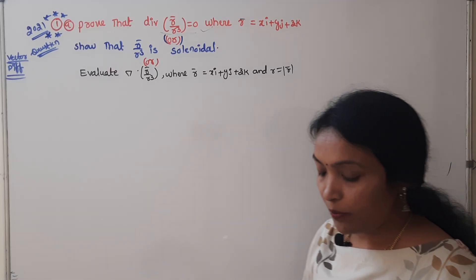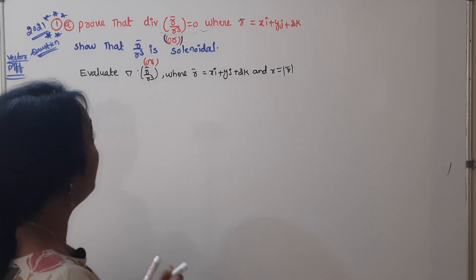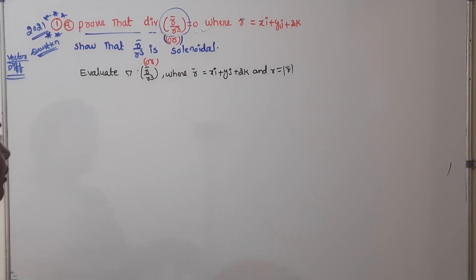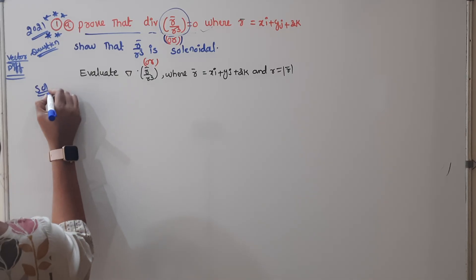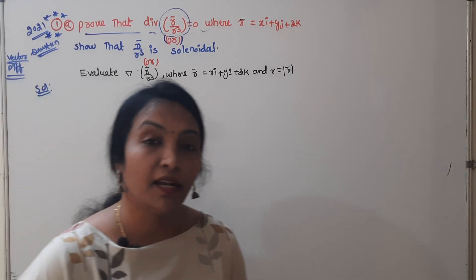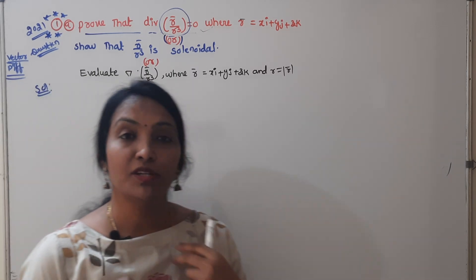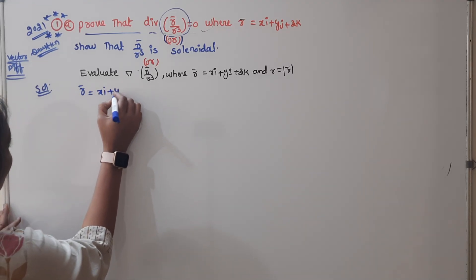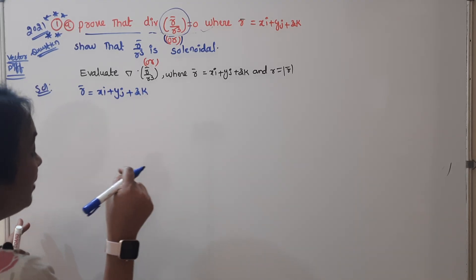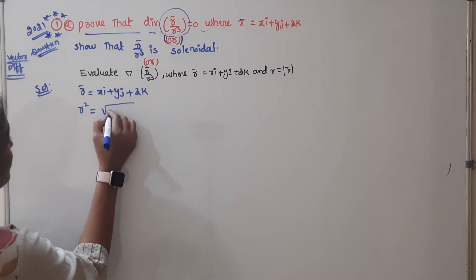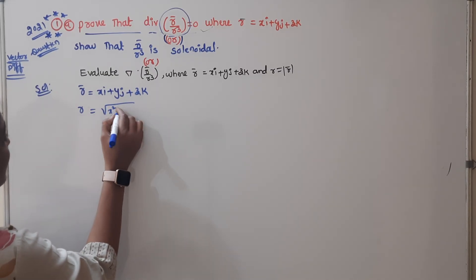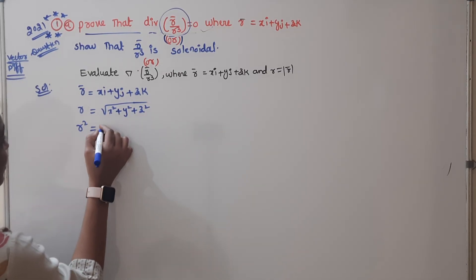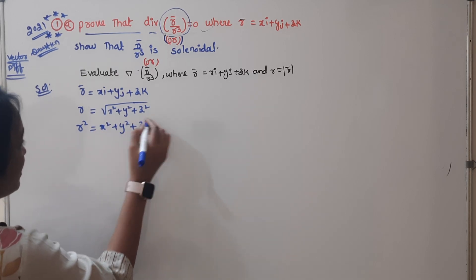First, what is our r? R̄ (the vector) is xi + yj + zk. And r is the magnitude: r = √(x² + y² + z²). So r² = x² + y² + z². We will use each and every term with differentiation to do the full marks.